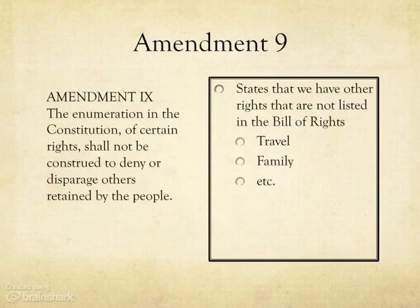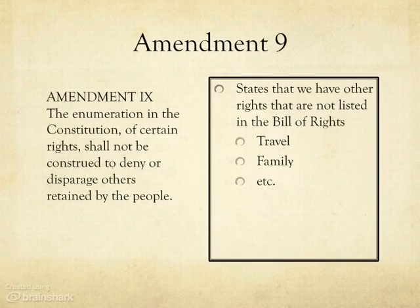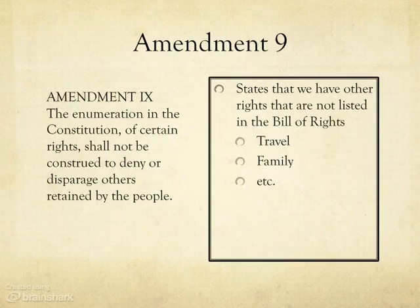Amendment 9 was put in place in recognition of the fact that we have far too many rights to list, and that there were other things that the Founding Fathers could not predict would be necessary to protect when the Constitution was written in 1787. It states that we have other rights not specifically listed in the Constitution, such as the freedom to travel, have a family, or own a car.